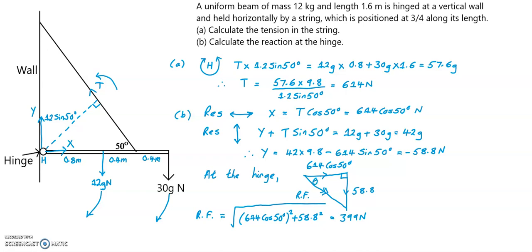So if I call this angle here theta, theta equals inverse tan, opposite 58.8 over the adjacent 614 cos 50 degrees, and that gives an angle to one decimal place of 8.5 degrees. Now you should say in which direction this is acting, so below the horizontal.